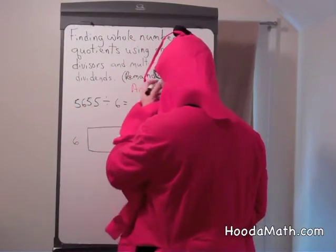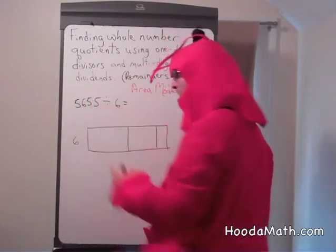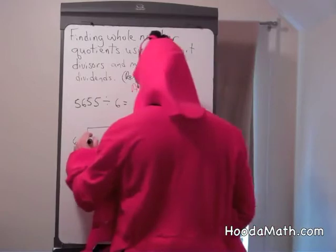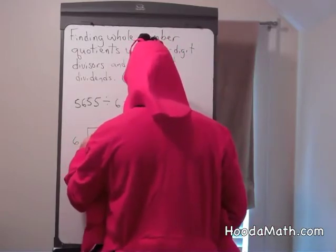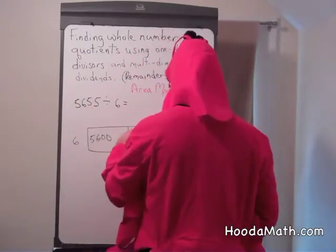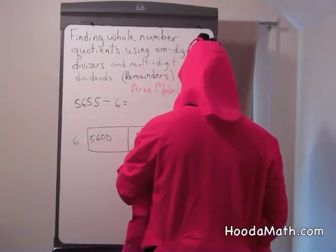Now the reason we're doing 5,600 first is that 6 does not divide into 5. So we're going to do 5,600 plus 50 plus 5.